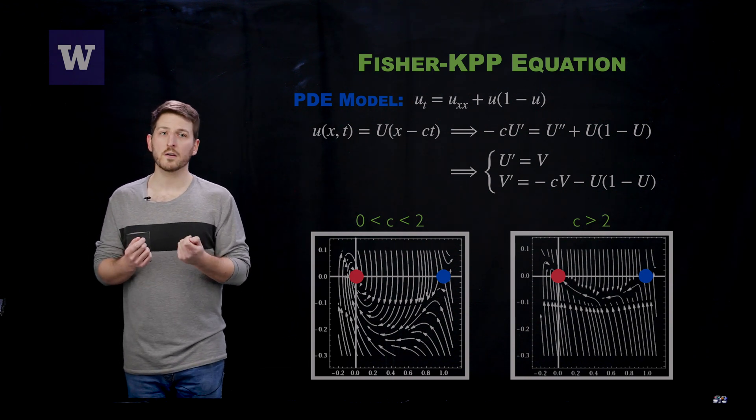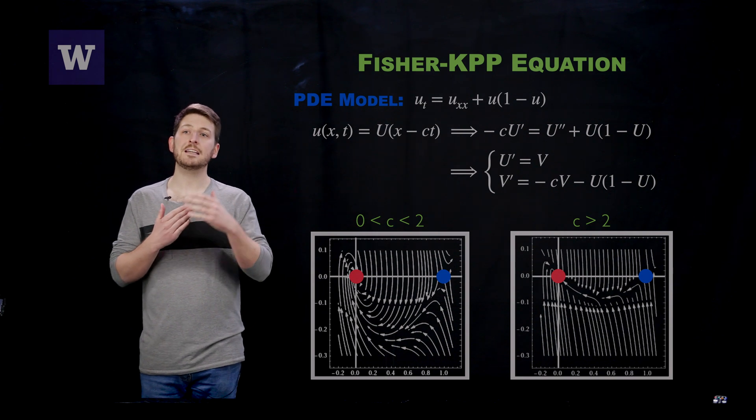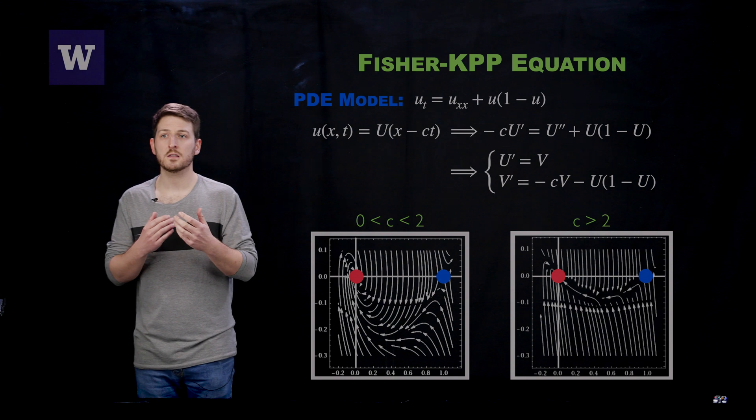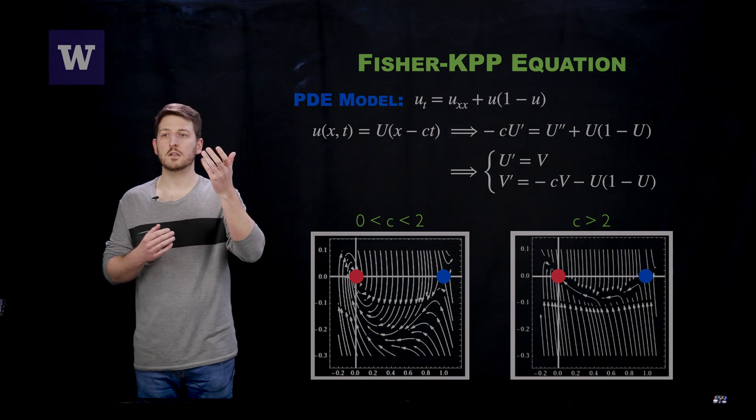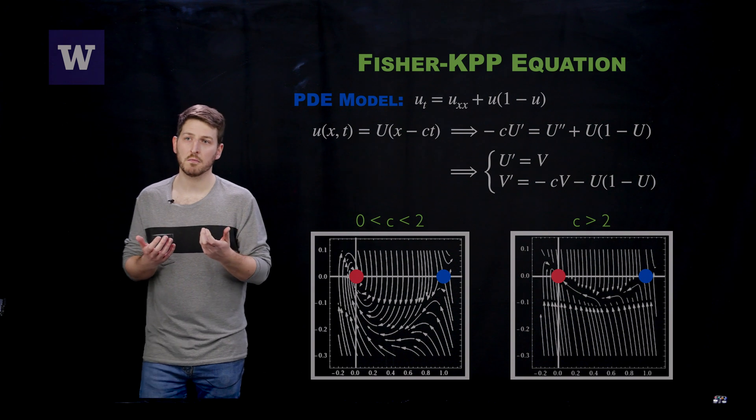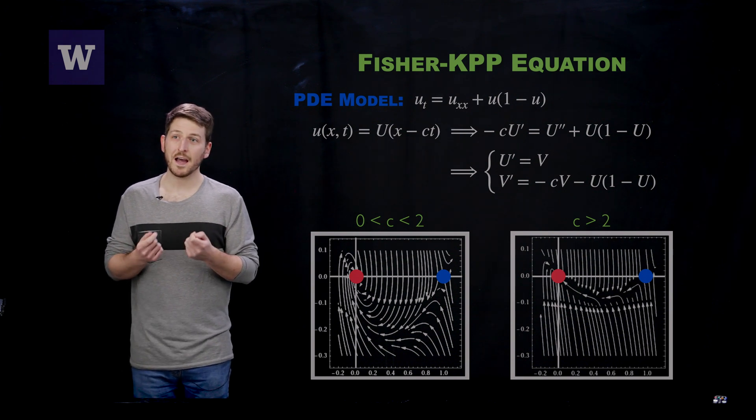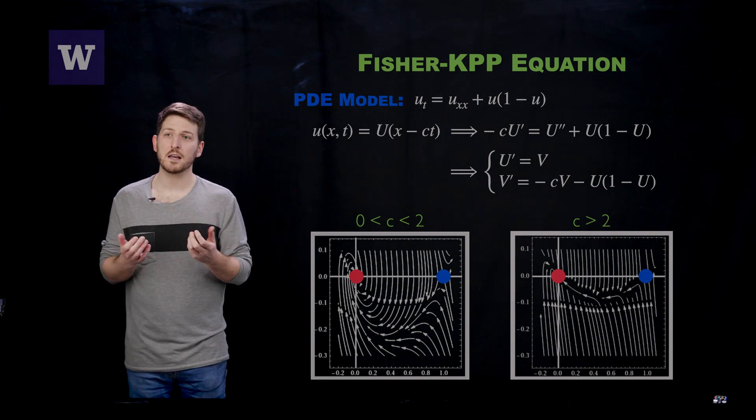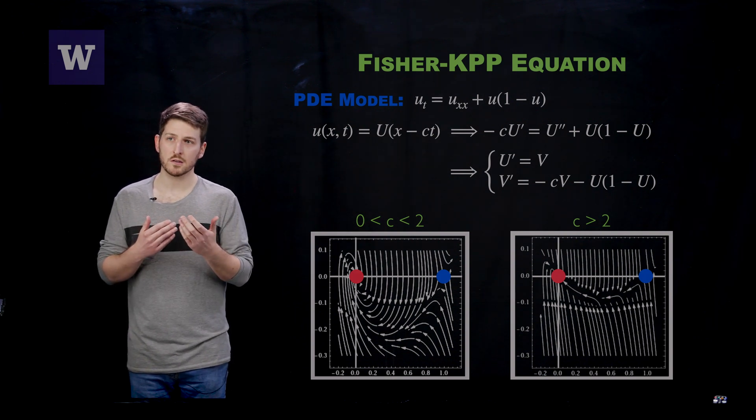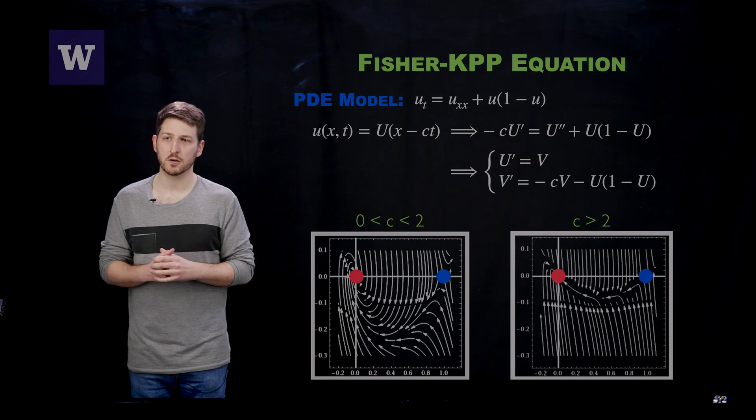Therefore, this tells you that you have a continuum of traveling wave solutions that travel at speeds equal to and larger than 2. This is a fundamental characteristic of many monostable systems. That is, they exhibit infinitely many traveling wave solutions, and the speed of these traveling wave solutions form a half line in the positive real numbers.